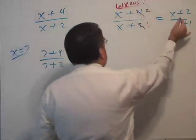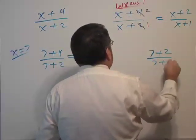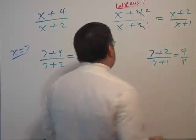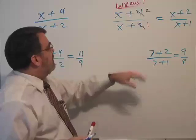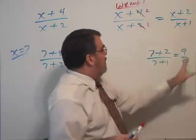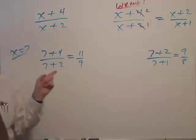If I plug seven into here, I get seven plus two over seven plus one, which is nine over eight. And if we had ignored the one, we just had an x here, it would have been instead nine over seven. In either case, it's not 11 over nine, is it?